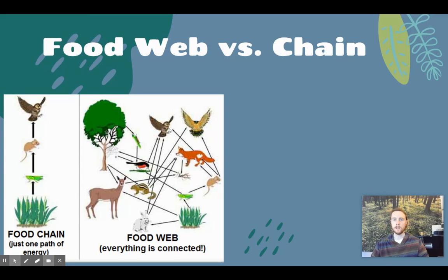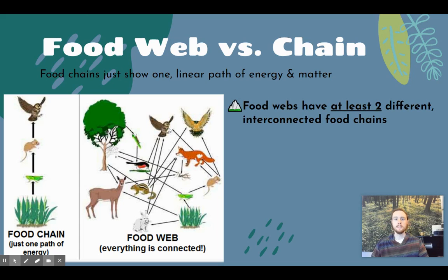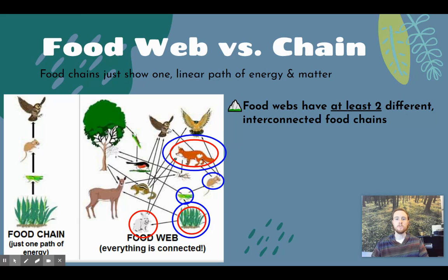A food chain is one simple pathway of energy and matter flowing from organism to organism. A food web is at least two connected food chains that share a common link. For example, a grass-to-rabbit-to-fox food chain is one linear pathway. If we add a second pathway — grass to grasshopper to mouse to fox — we now have a food web because these two separate chains are linked by the fox as the common organism. Food webs do not have to be incredibly complex; the basic definition is just at least two food chains connected by one common organism.